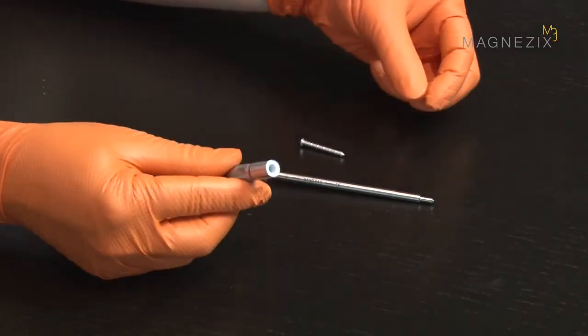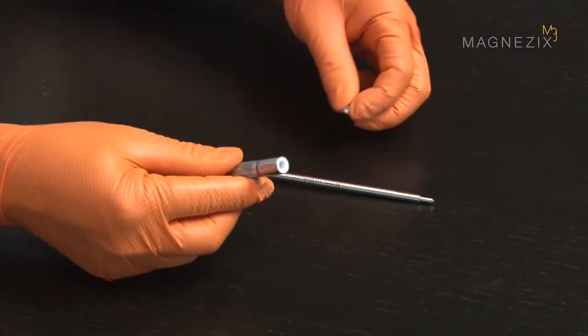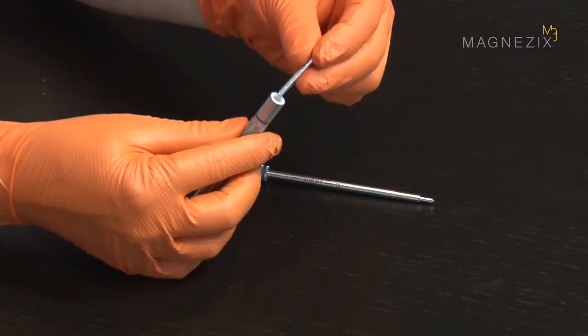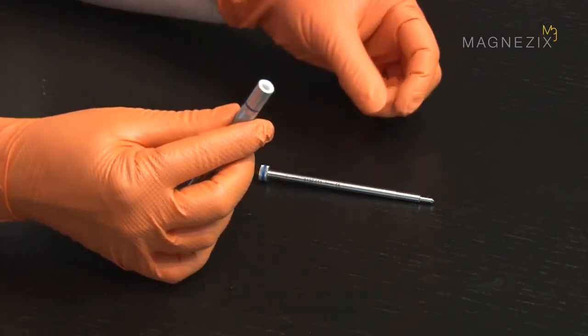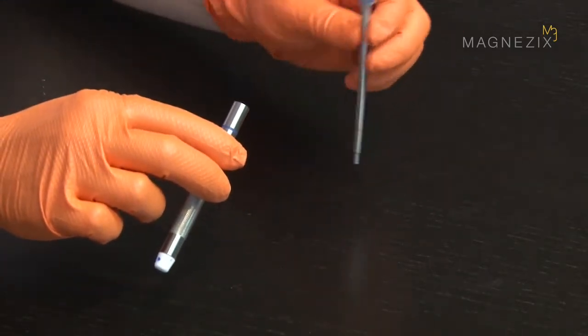The impactor sleeve can now be loaded with a 3.2 mm pin. The impactor insert is then inserted into the sleeve.